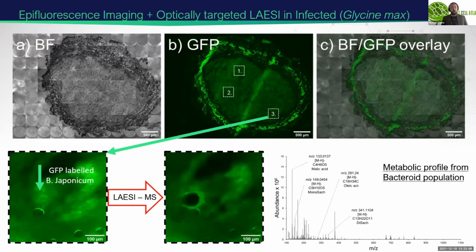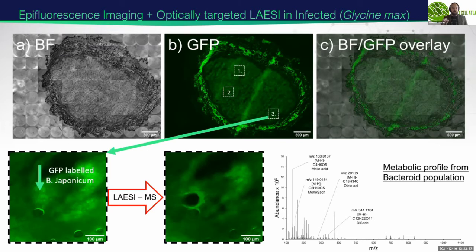The other thing we can do with our system is use fluorescence for targeted cell ablation. Here I'm showing images taken using the CCD, looking at bright field and fluorescence wide-area imaging and a BF/GFP overlay. This is a section of soybean nodule infected with GFP-labeled rhizobia — Bradyrhizobium japonicum. We can see the infection zones and identify them, then target and ablate those specific cells to collect the metabolic profile, which is fluorescently informed.